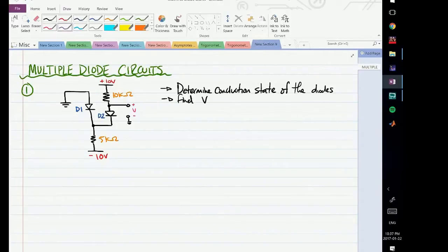So we have a question here that asks to determine the conduction state of the diodes as well as to determine the value of V. If you pay attention here, V is this value - the voltage after the 10k resistor, between diode D2 and the 10k resistor, with respect to ground.